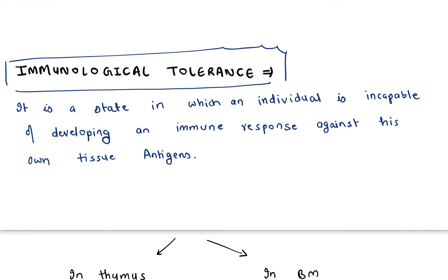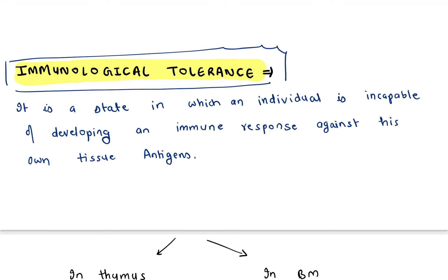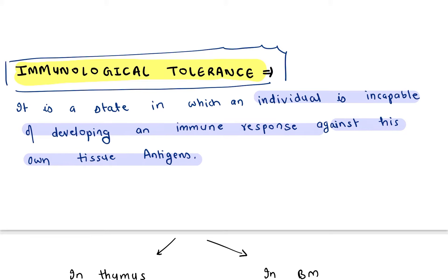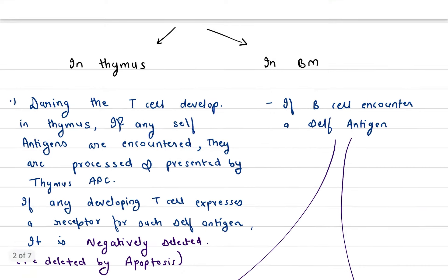Welcome to my YouTube channel, Exam Point of View. Today we are going to talk about immunological tolerance, which comes under the immunity chapter. Immunological tolerance is a state in which an individual is incapable of developing an immune response against their own tissue antigens.